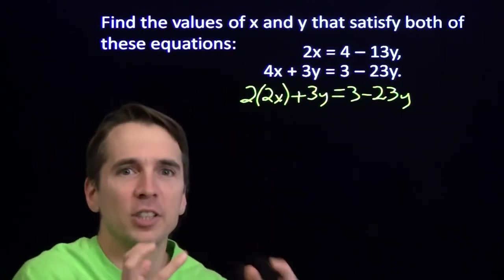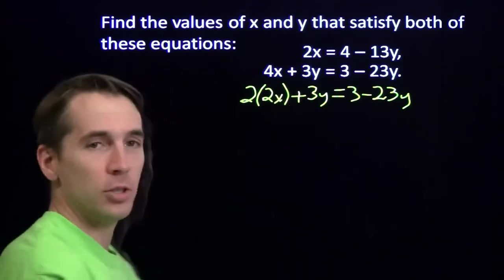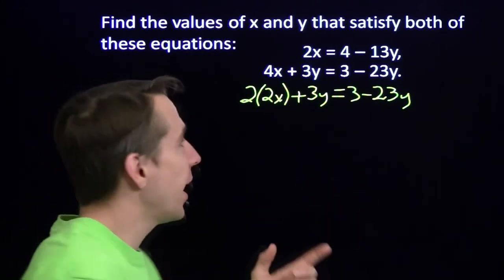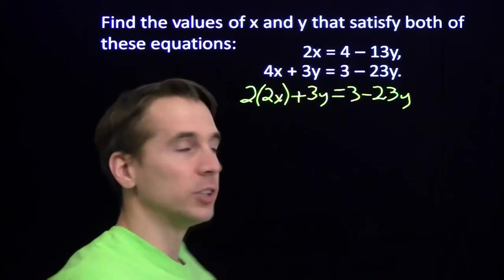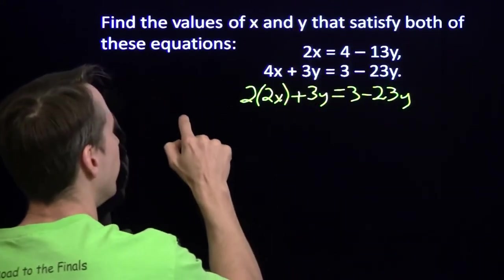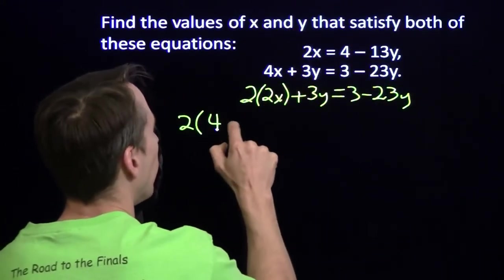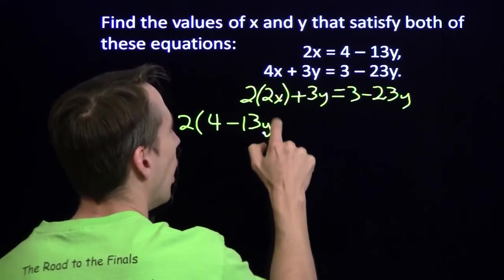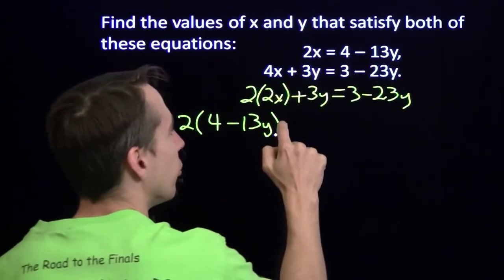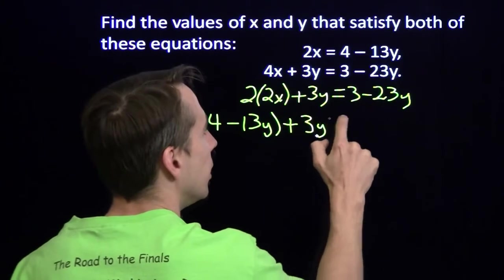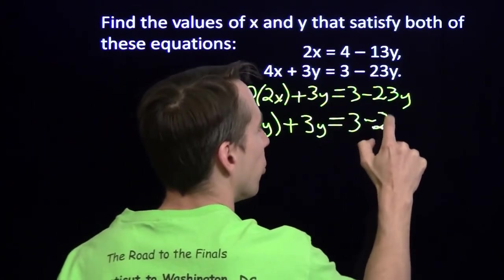You don't just only have to substitute just for variables. I can substitute for 2x just like I substitute for x. I've got an expression here for 2x. I'll go ahead and substitute. And I have 2 times 4 minus 13y, because that's what 2x is, plus 3y equals 3 minus 23y.